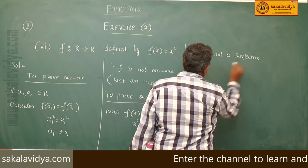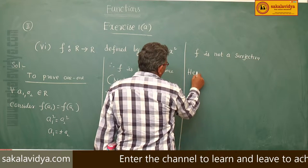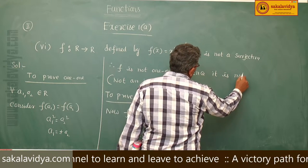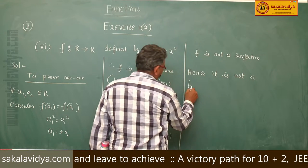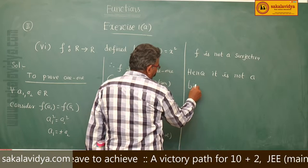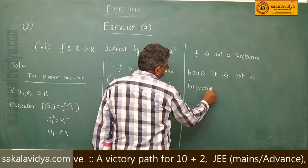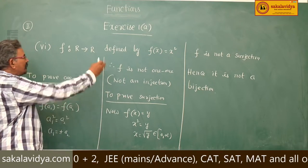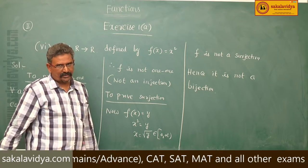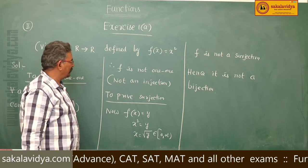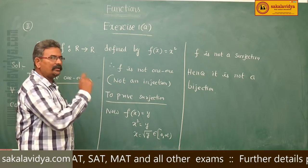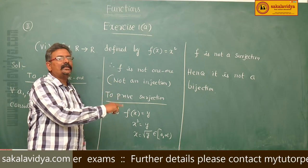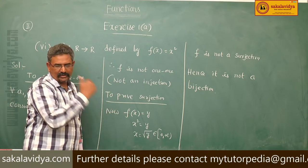Hence, f is not a bijection. Since f maps R to R defined by f(x) = x² is neither 1-to-1 nor surjection, it is not a bijection.